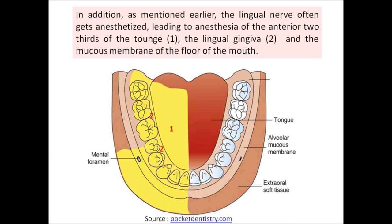In addition, as mentioned earlier, the lingual nerve often gets anesthetized, leading to anesthesia of the anterior two-thirds of the tongue, all the lingual gingiva, and the mucous membrane of the floor of the mouth.